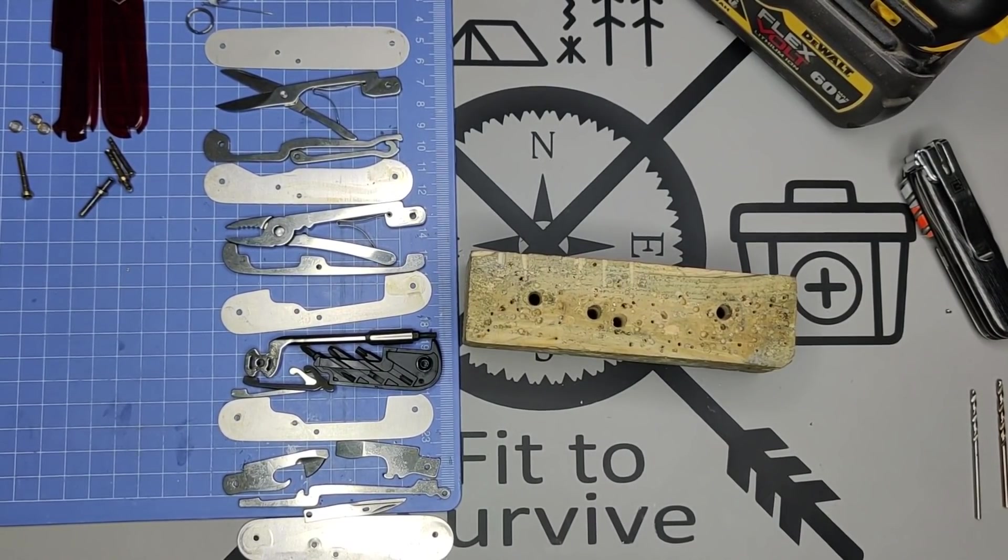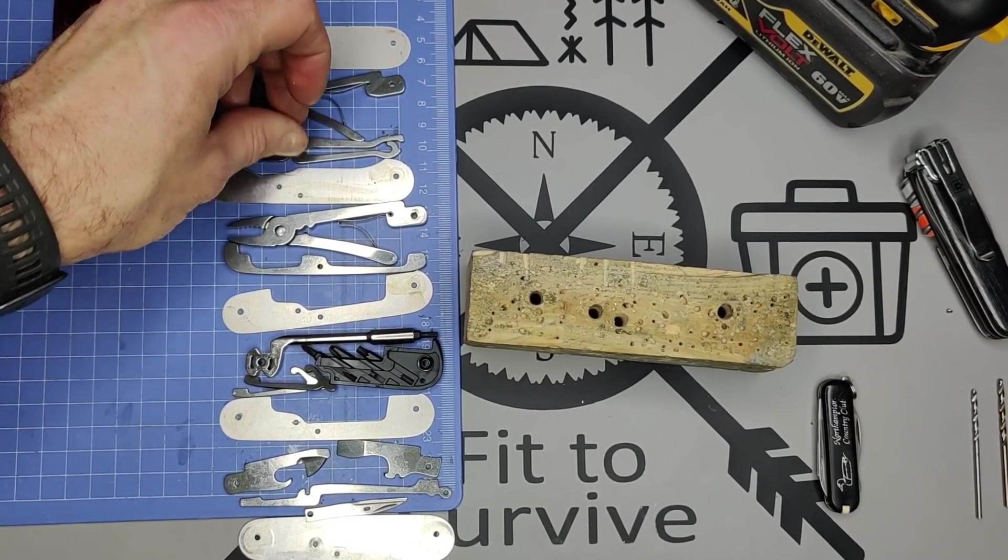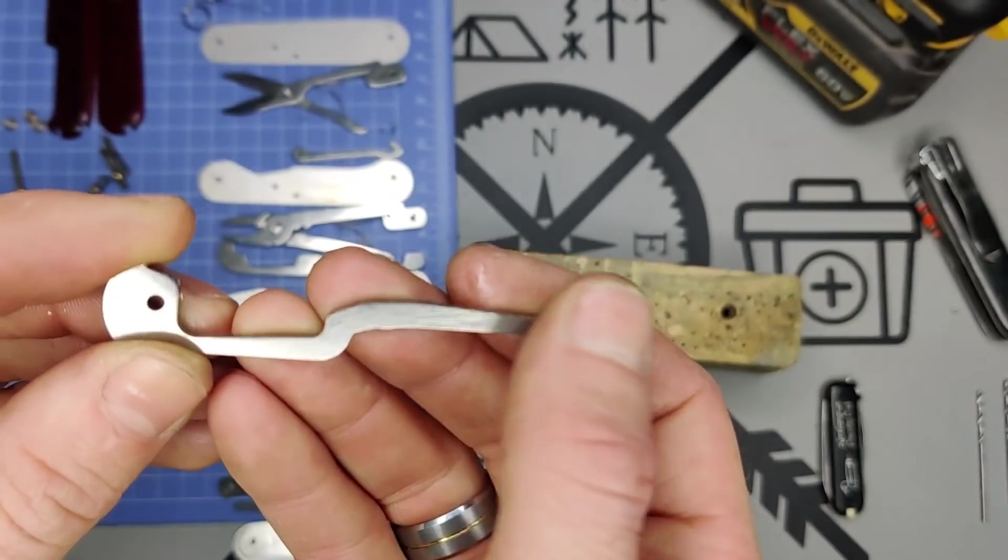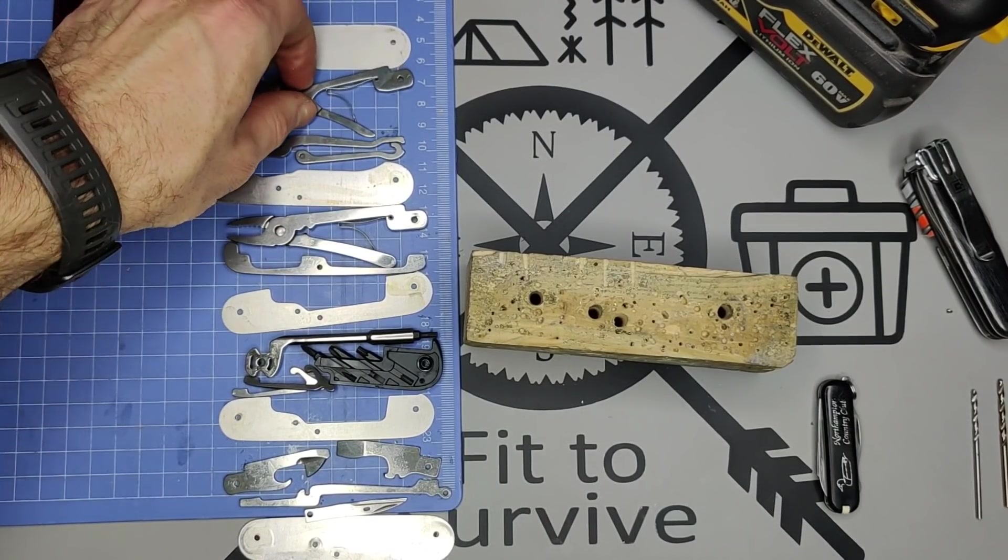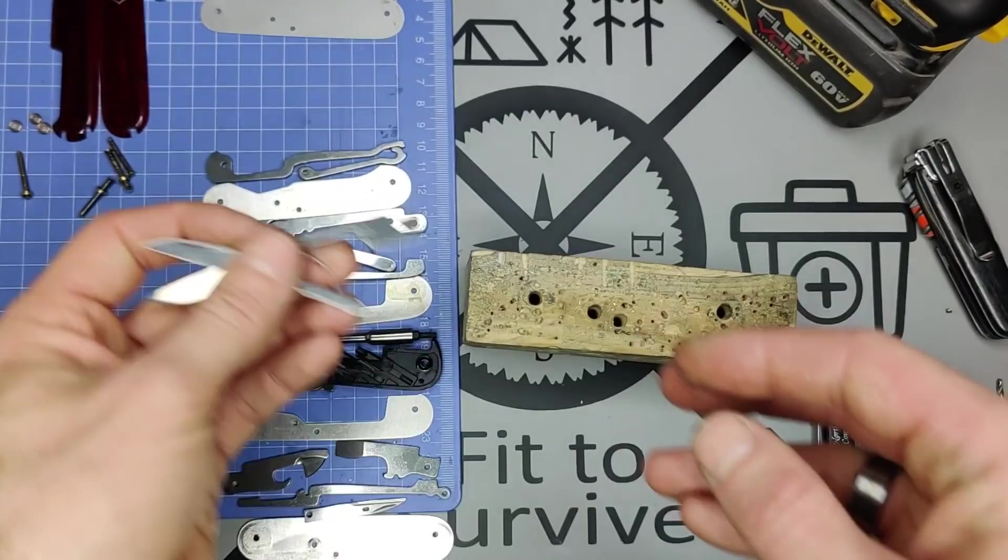All right, so now what we need to do is we're going to clean up all these tools because like I said, they're quite greasy from being originally oiled. So I'll clean that up and we're going to acid etch all the tools to give this nice dark color.